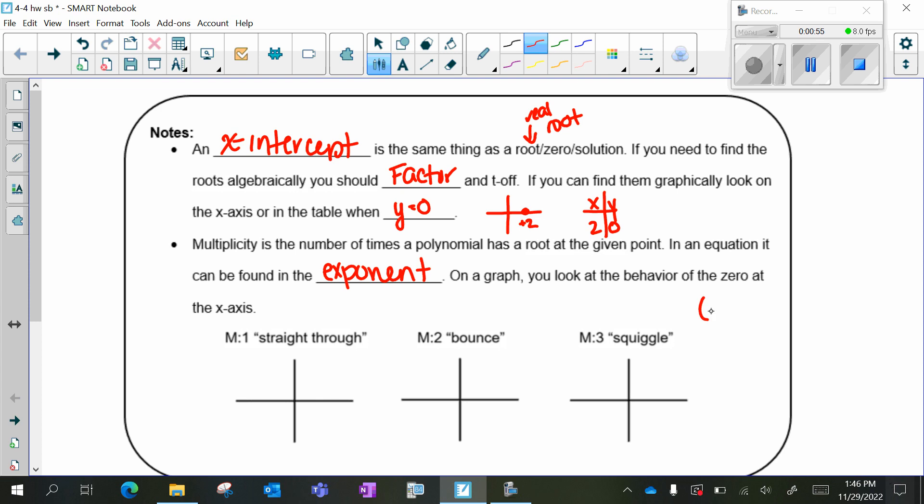For example, if I have (x - 3)² this is known as a double root. x = 3 occurs twice. It has a multiplicity of 2.